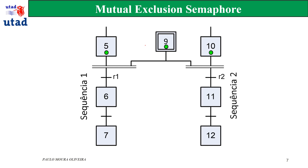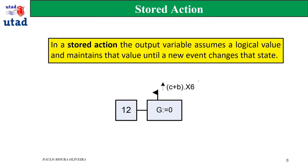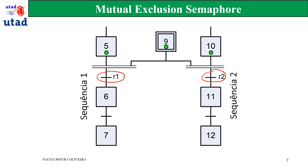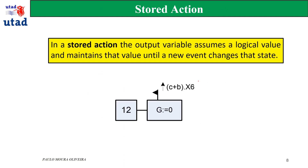This is the case where we have a conflict. In this case we have to decide which one of these transitions — this one or this one — is going to be fired first. We are going to explain this better with an example in a while.